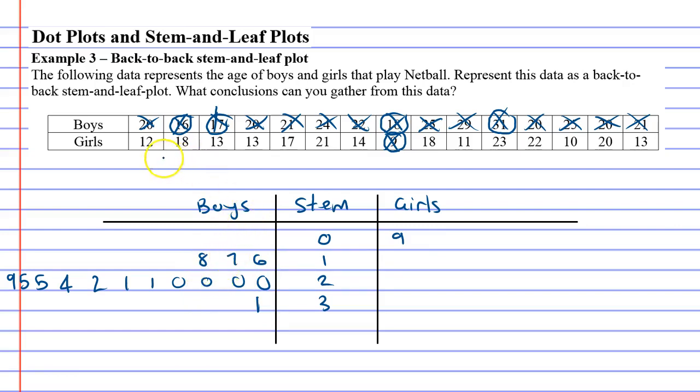Alright, now let's look at the girls. So let's look at the tens. Actually first of all we've got a 10 there so that's going to go here. What else we got? We've got an 11, 13, 18, 14, 17, 13, 13, 13, 18, 12. Lots in the tens.